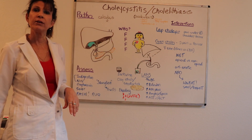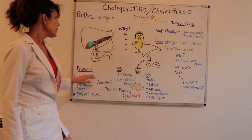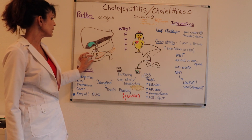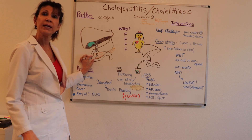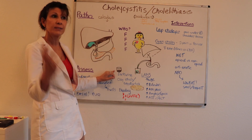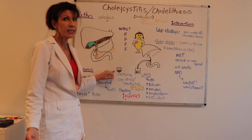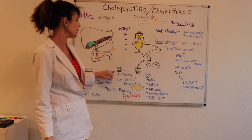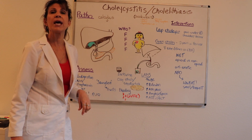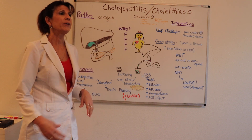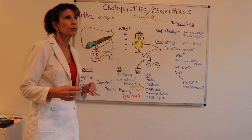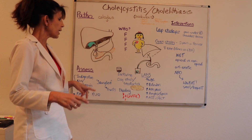Because this bile pigment is not getting secreted into the duodenum to pigment the stools, you get dark urine from bilirubin in the circulating blood, but the stools are not pigmented. They are described as clay-colored, though they're actually more of a grayish color — like gray clay from arts and crafts class.